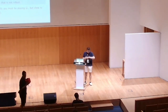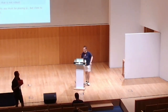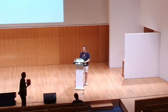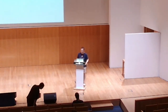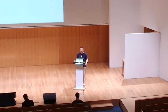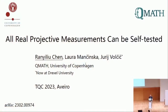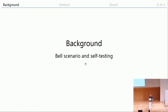The next speaker, Rani Liu Chen from the University of Copenhagen, is introduced. Chen explains that for the next half hour they will introduce how to self-test an arbitrary real projective measurement, beginning with background on self-testing that may overlap with the previous talk.